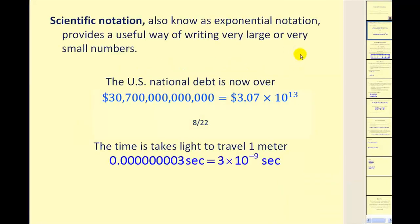Scientific notation, also known as exponential notation, provides a useful way of writing very large or very small numbers. For example, the U.S. national debt is now over 30.7 trillion dollars, which can be expressed in scientific notation as 3.07 times 10 to the power of 13. The time it takes light to travel one meter in decimal notation can be rewritten in scientific notation as 3 times 10 to the negative ninth power.